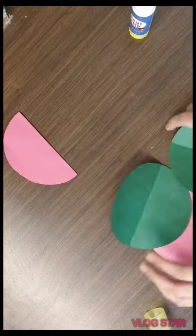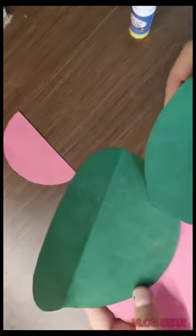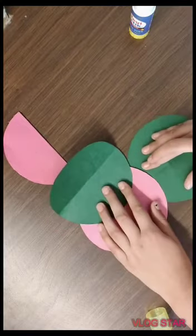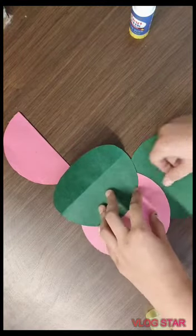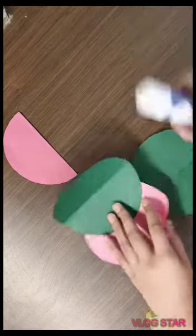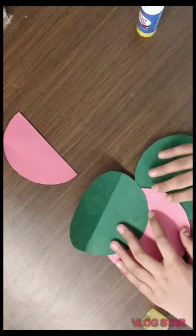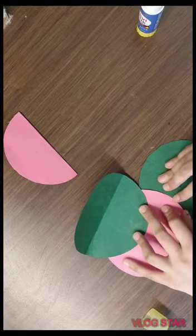So now we will take another one and then we will again put it like that half. It should match on this line like this. So here we will stick it and we will put glue on just the part where the circle is fitting. So it looks like this.